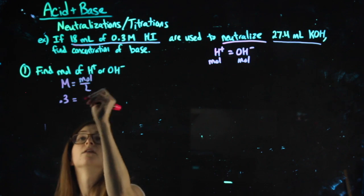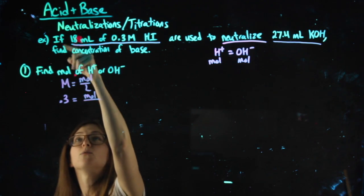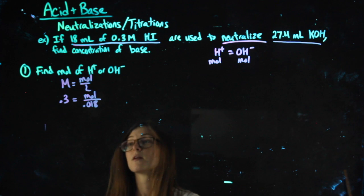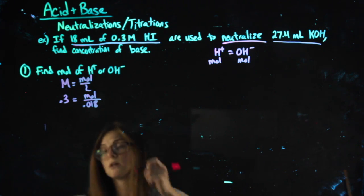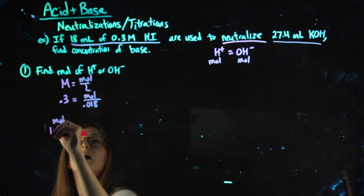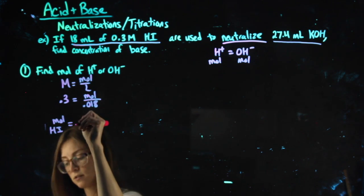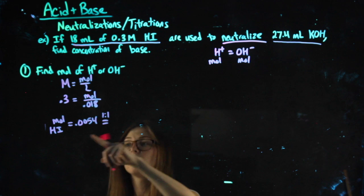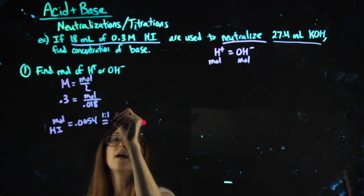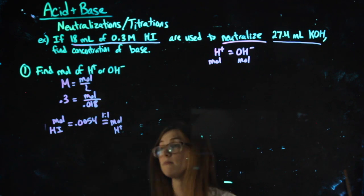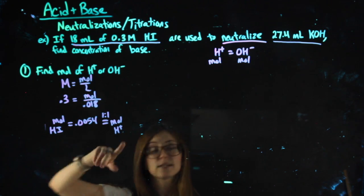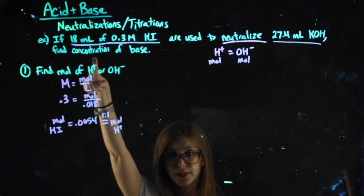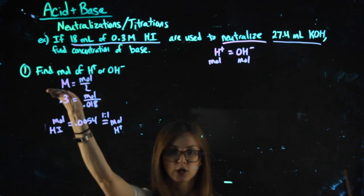Molarity of my acid is 0.3. So I can find the moles of my acid, moving the decimals so that this is in liters. 0.3 times 0.018. What I have here is my moles of the acid, HI. Now, because of a one-to-one ratio between HI and H+, that is also my moles of H+. So in this case, I found moles of H+. I couldn't have found OH- because I didn't have the molarity. In fact, they're asking me to find the concentration, the molarity of the base. So it makes sense I couldn't plug that in yet.